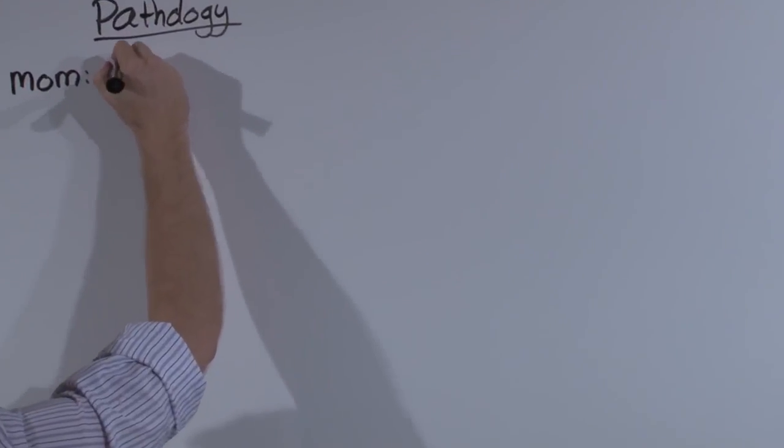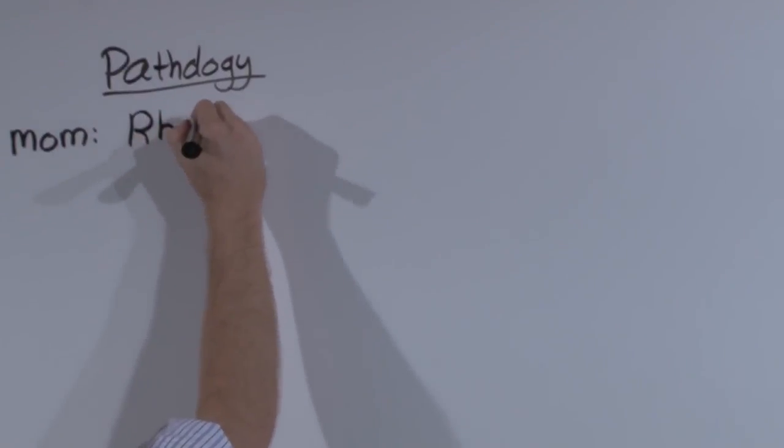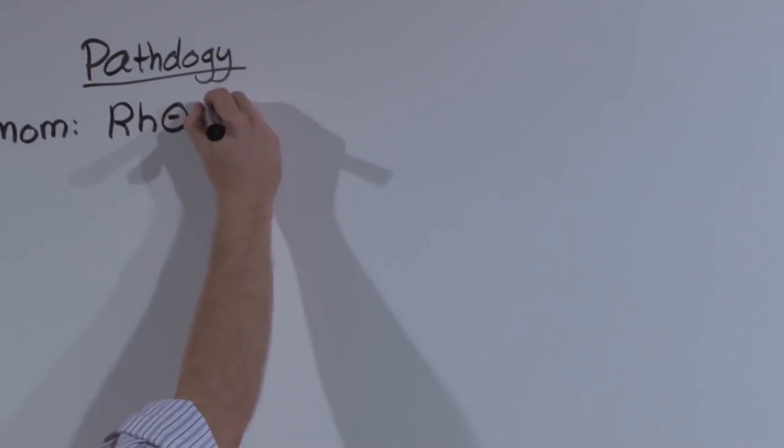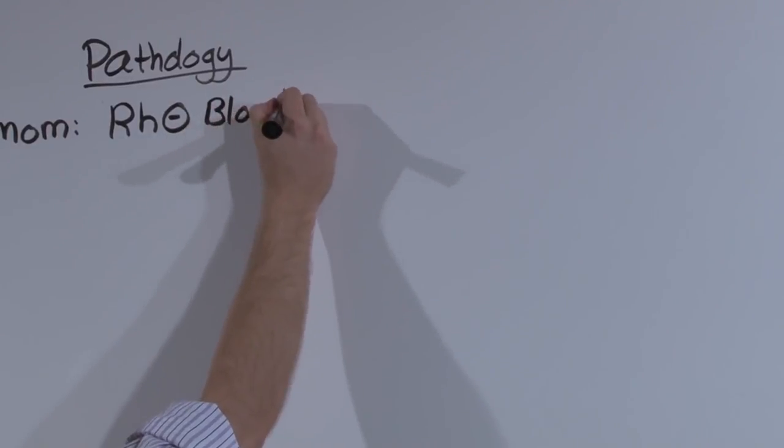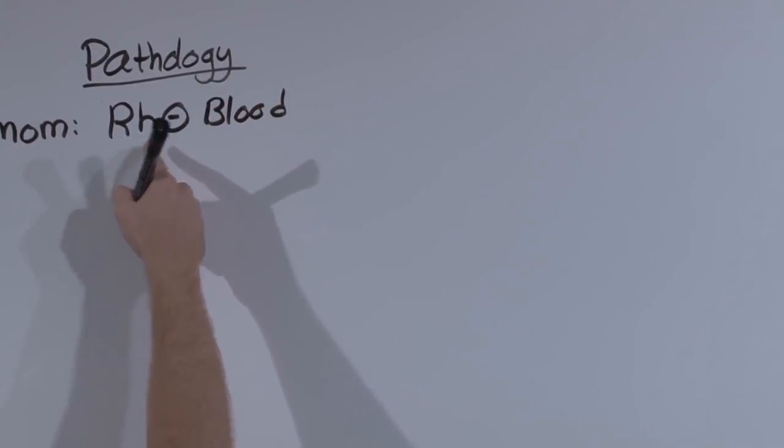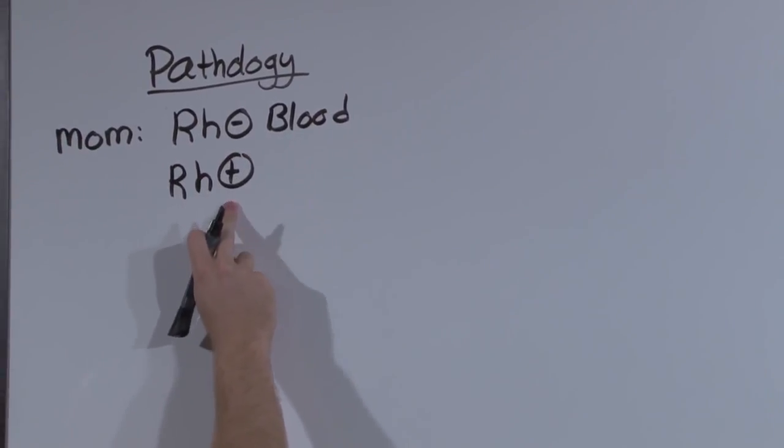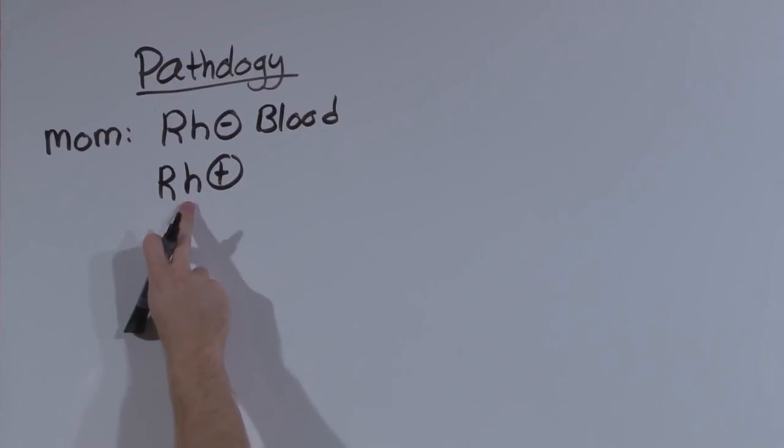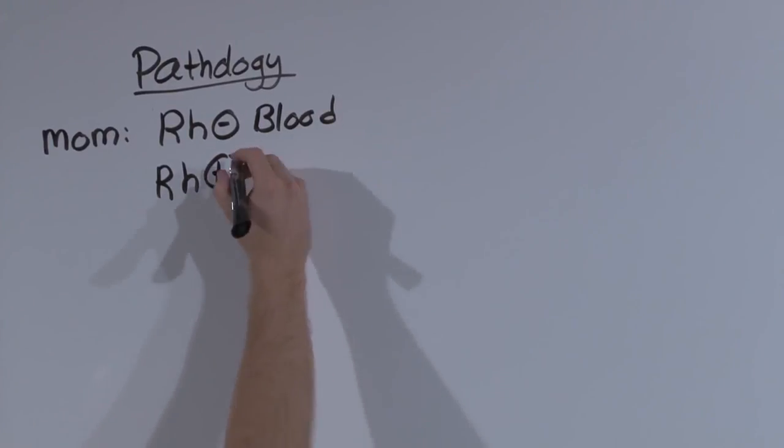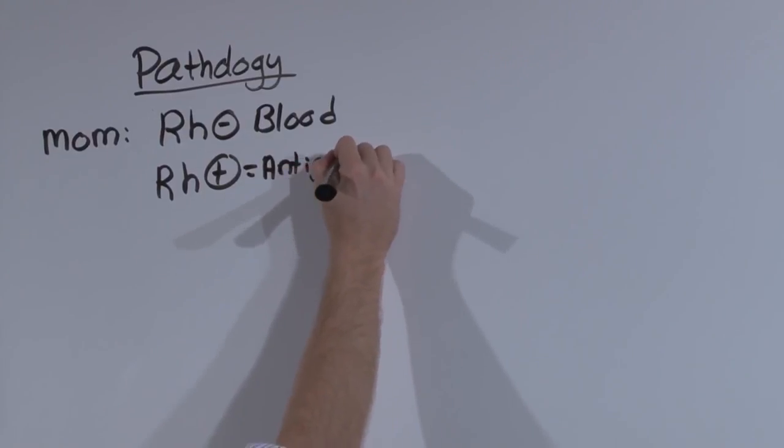What has to happen is that mom has to be Rh negative. That is, her blood has no Rh antigen. And then when baby comes along who is Rh positive, mom sees that blood as foreign and she develops an antibody to this antigen.